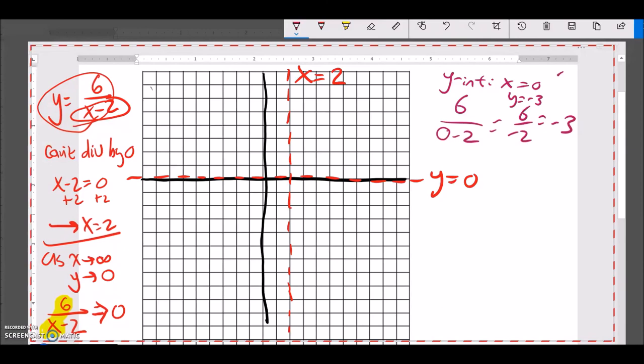So I have a point 0, negative 3, so that is 1, 2, 3 right here. Let me label it: 0, negative 3. And I can plug in some other points, but for the most part I know what this is going to look like. It's going to look like this. And I can plug in a point up here if I wanted, but that's what the graph is going to look like.